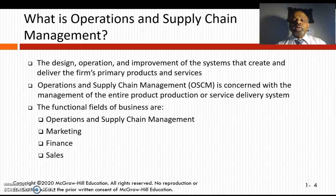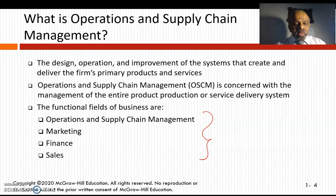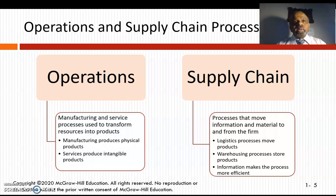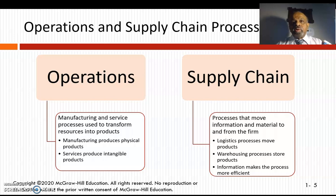The functional fields of business include operations, supply chain, marketing, finance, sales, HR, and information systems. Within operations and supply chain management there are two distinct areas. Operations refers to manufacturing and services — the two major productive sectors of the economy alongside agriculture. Managing the manufacturing and service industries is what we call operations.